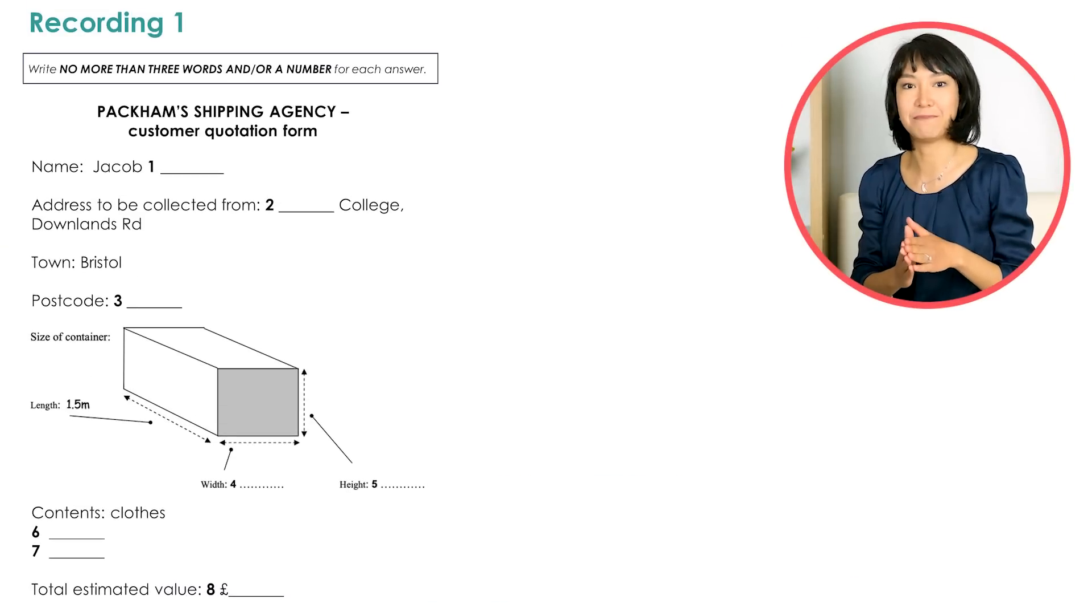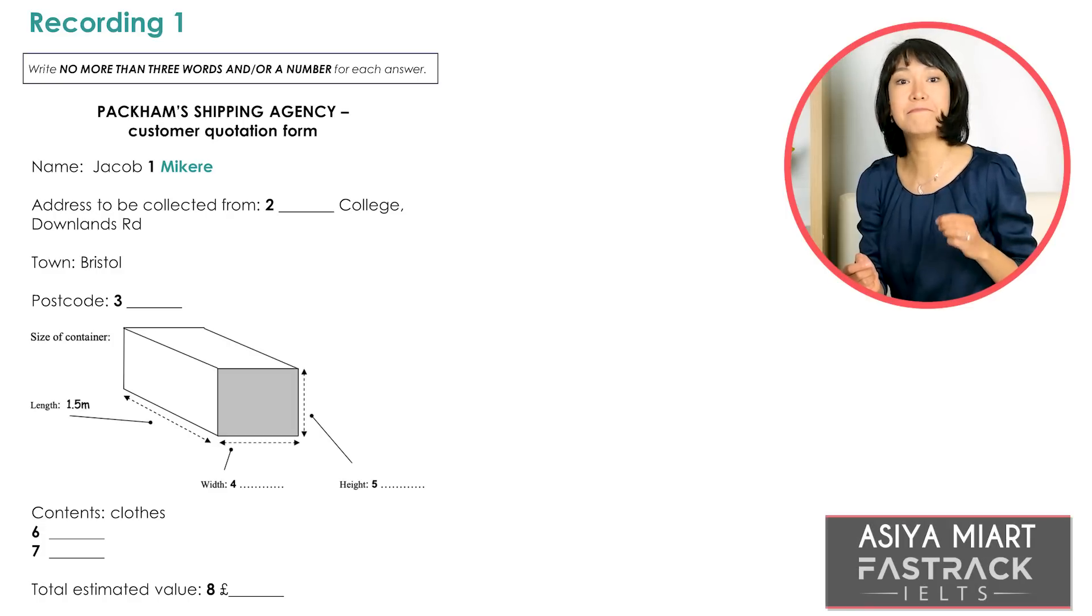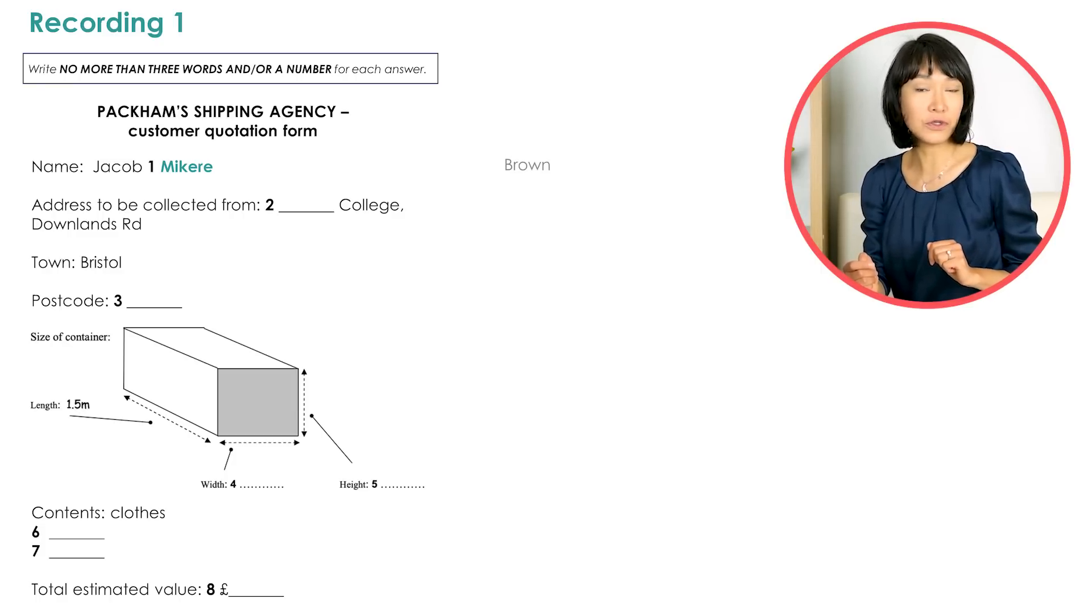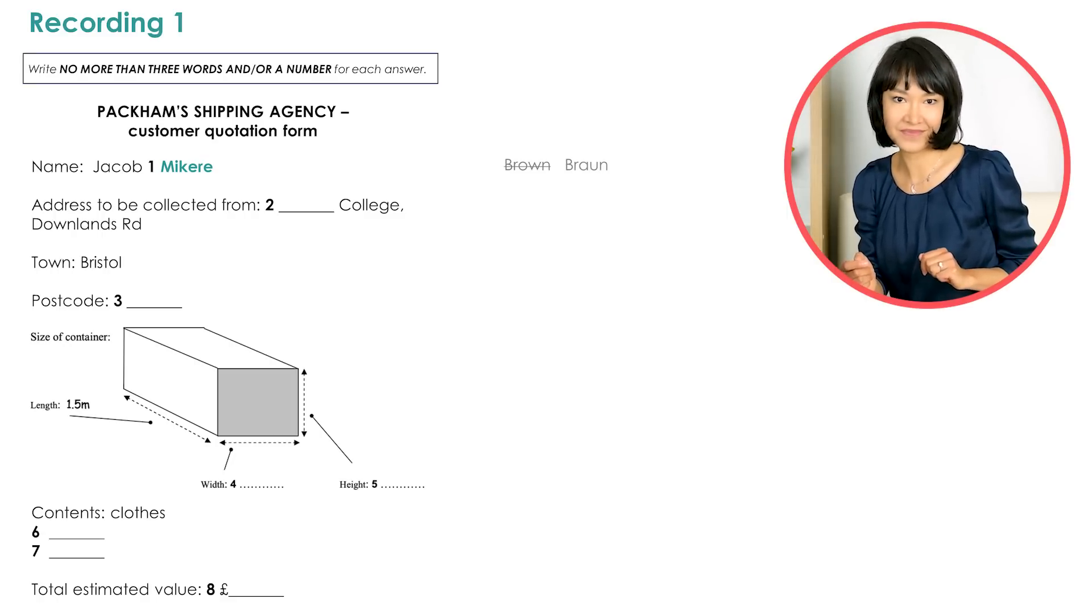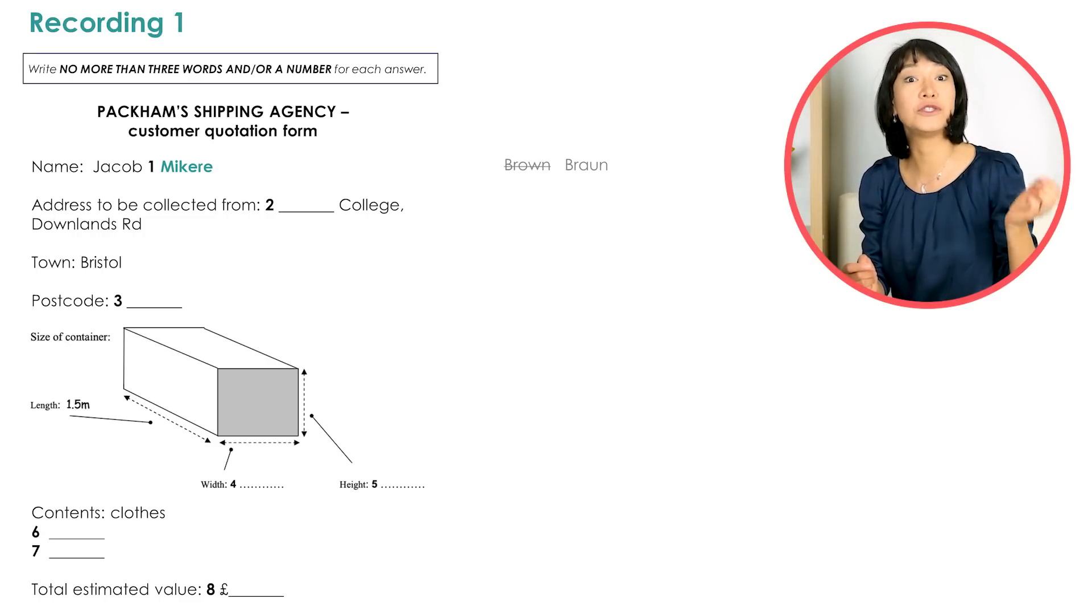How did it go? Let's check. The first answer is a surname, Mkere. In this case, it was just spelled out one letter after another. When you have a more common surname, the spelling may be not what you expect. Listen to this example: My name is Alice Brown. Is it B-R-O-W-N? No, it's B-R-A-U-N. So listen to all the information provided. Don't assume you already know the answer before they finish discussing it.